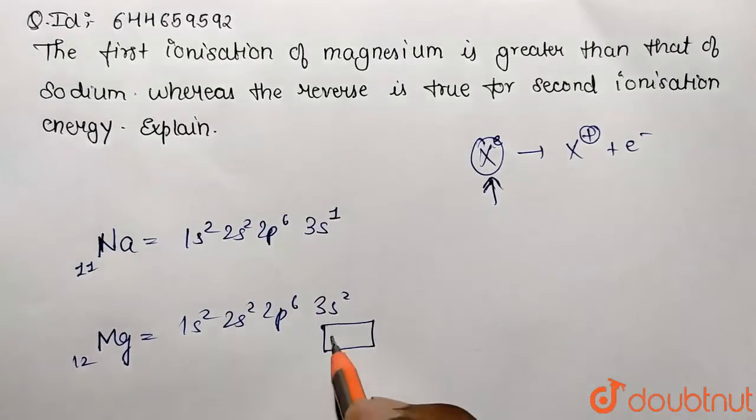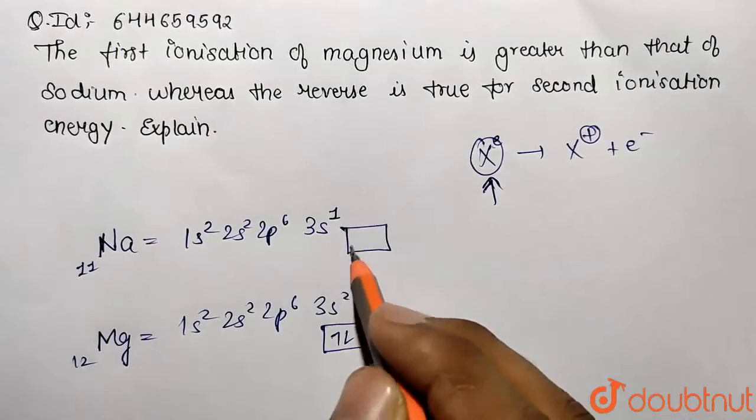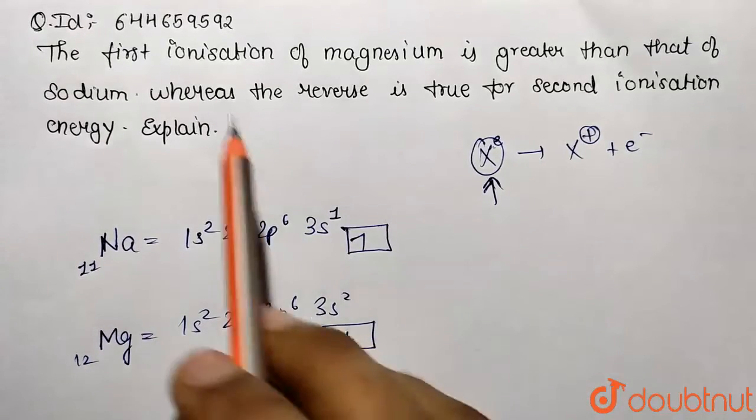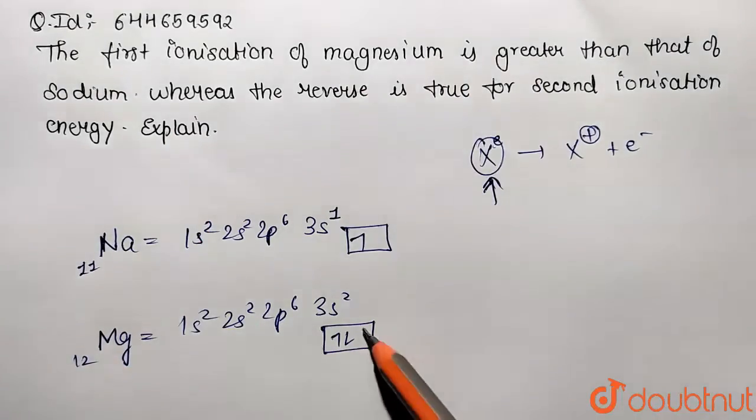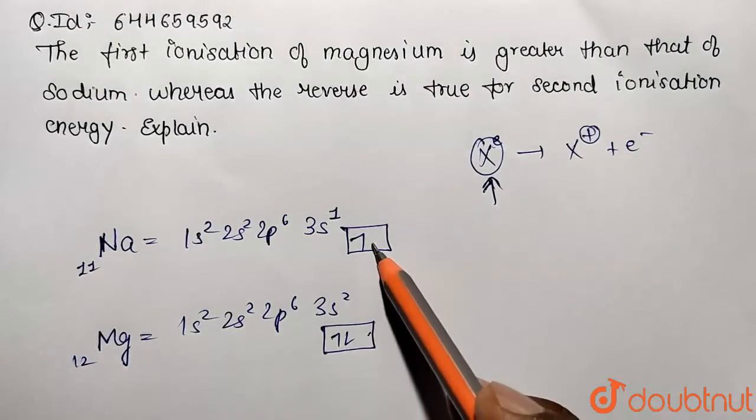Now they are telling first ionization energy of magnesium is greater than that of sodium. Yeah, obviously true because it is a stable and this one was unpaired, so this energy is going to be more.